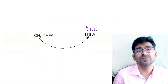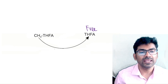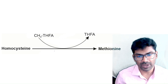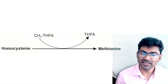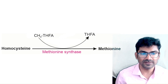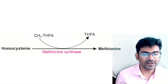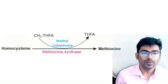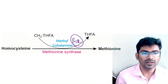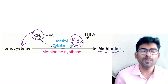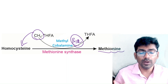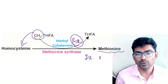To produce free THFA from methyl-THFA, we need the conversion of homocysteine to methionine. The enzyme that catalyzes this reaction is methionine synthase. The other vitamin needed for this reaction is B12 — methyl cobalamine. Homocysteine accepts the methyl group and becomes methionine.